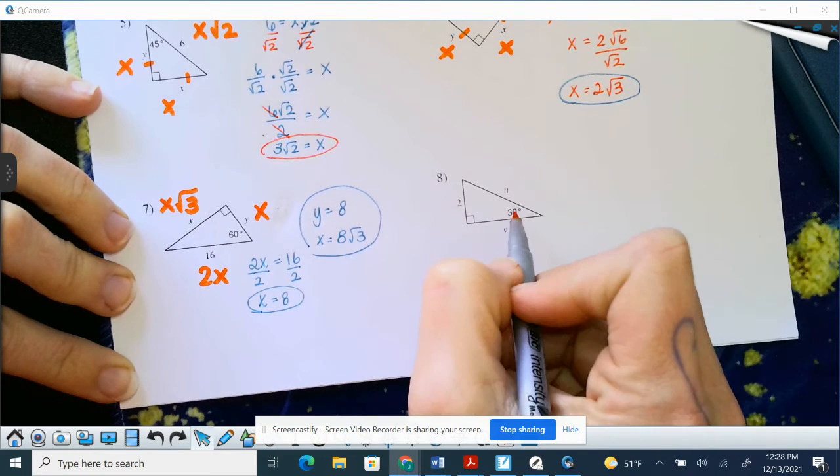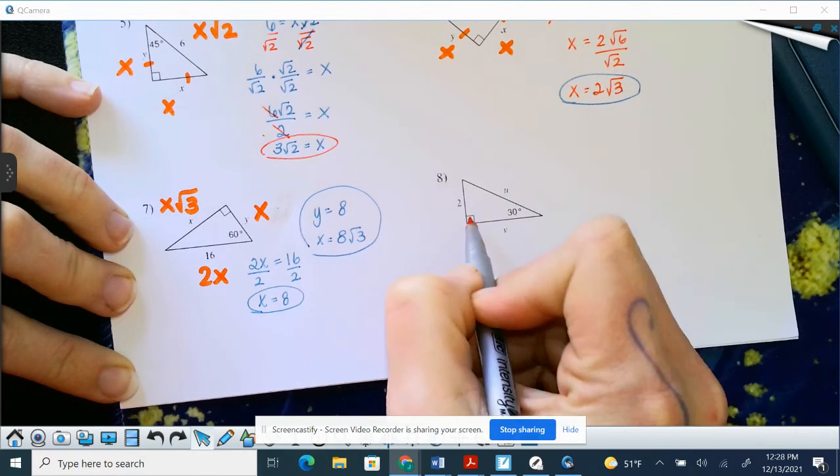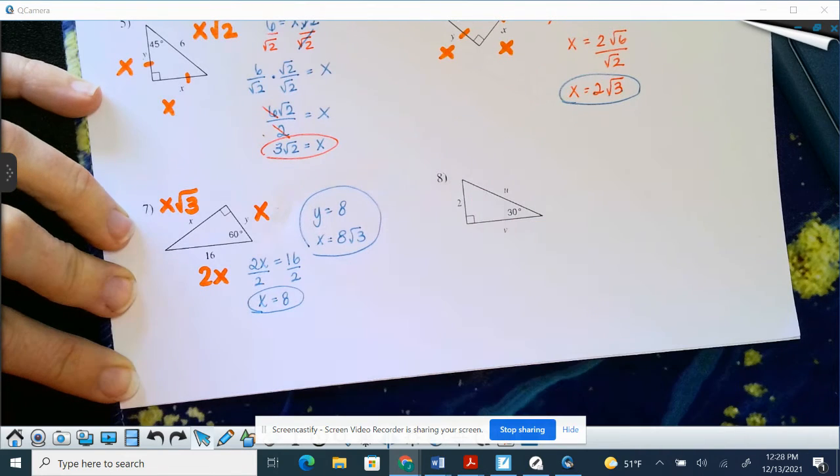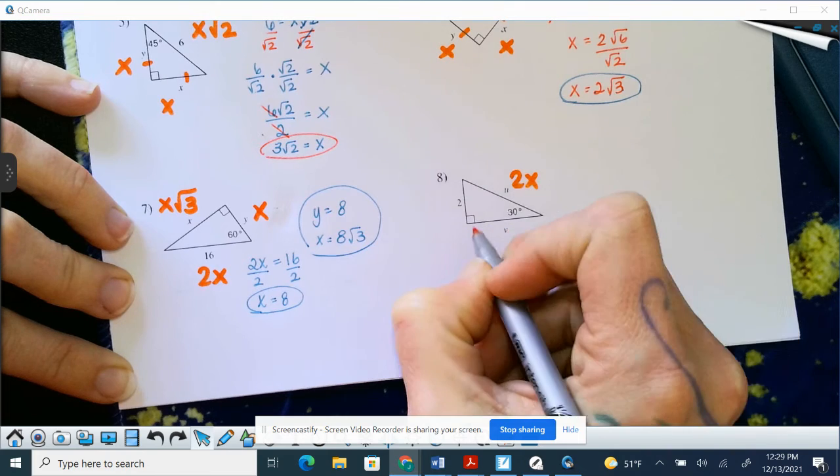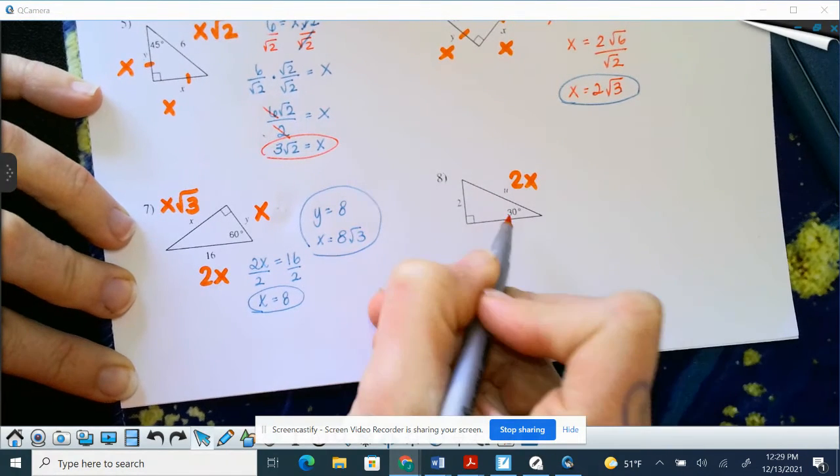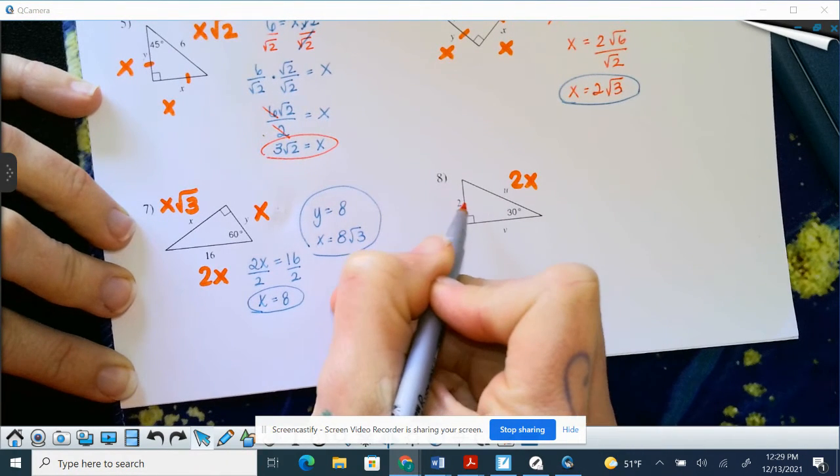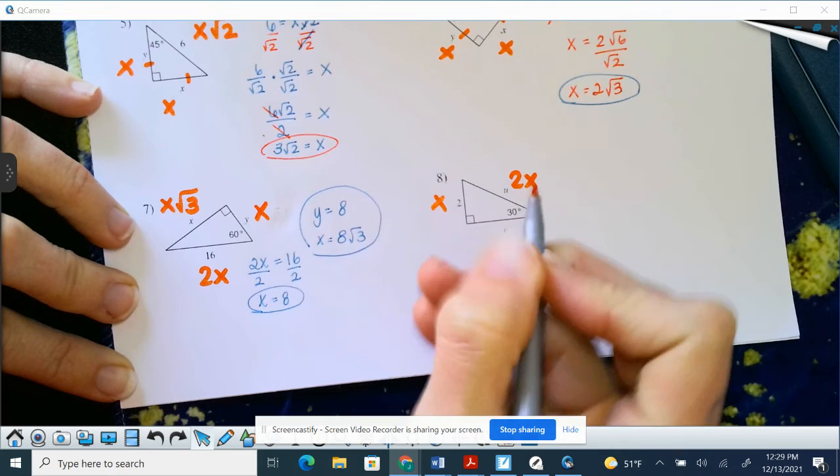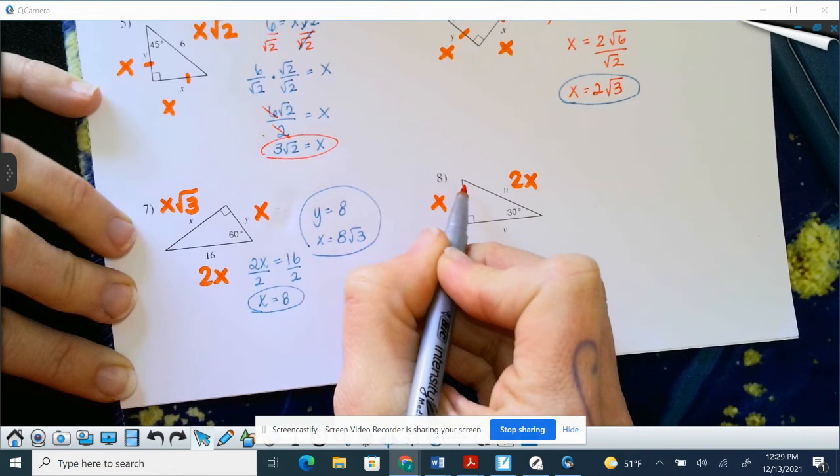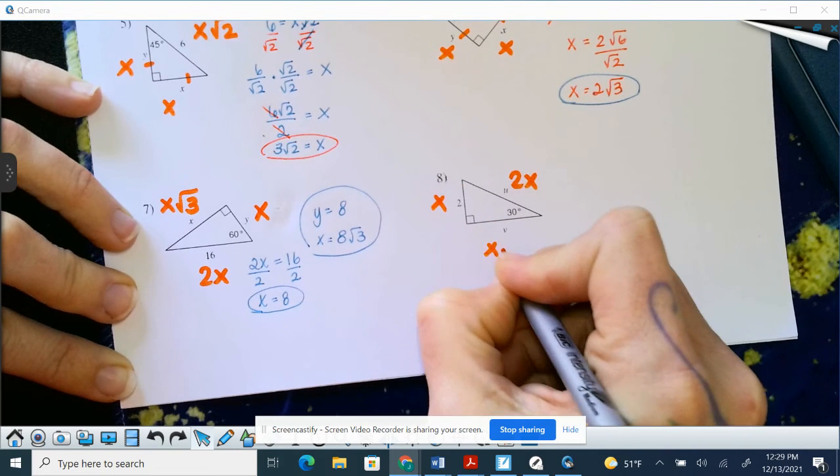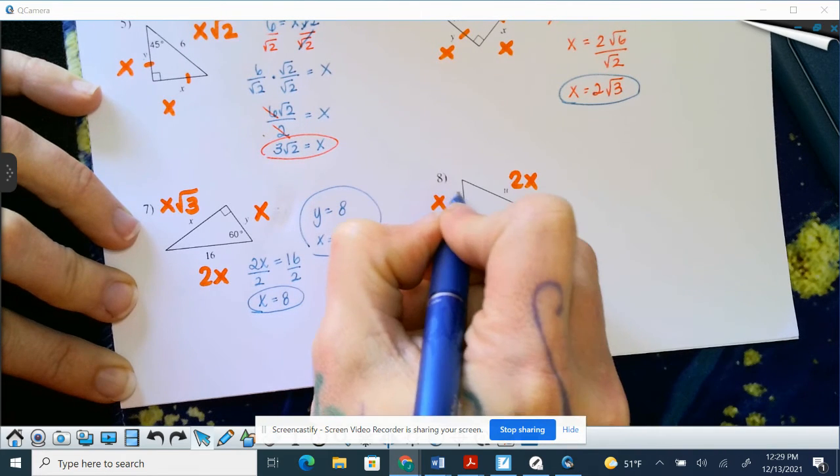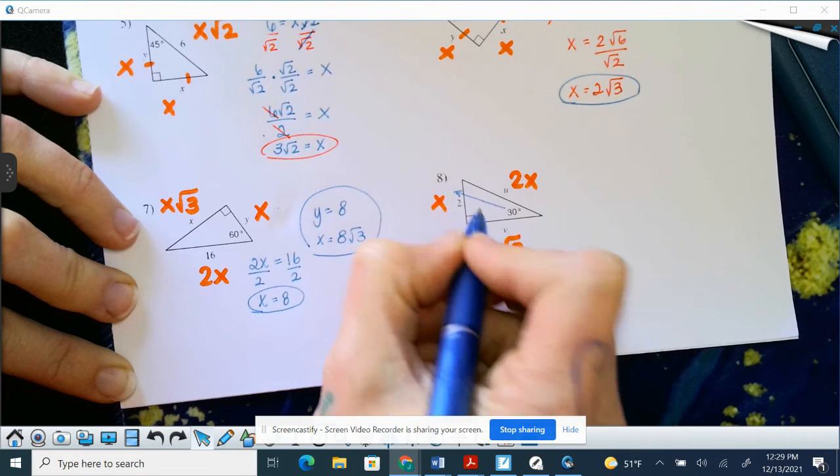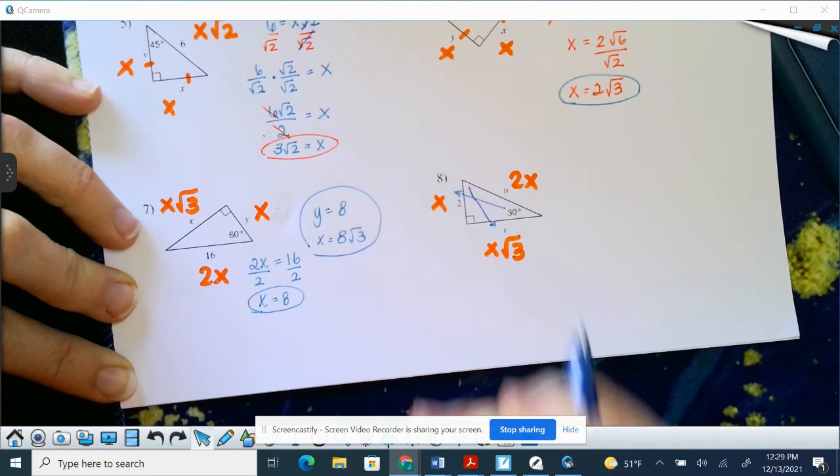So again, 30, 60, 90. Because if I use 30 and I use 90, then I know I have 60 left. The hypotenuse is always 2X, and that's the side across from the 90. The side across from 30 is always going to be X, and across from 60 is always going to be X square root of 3.